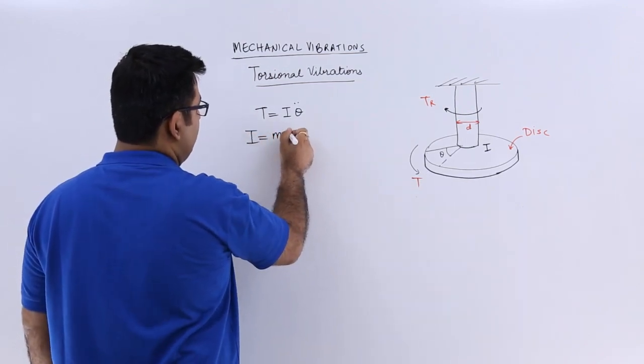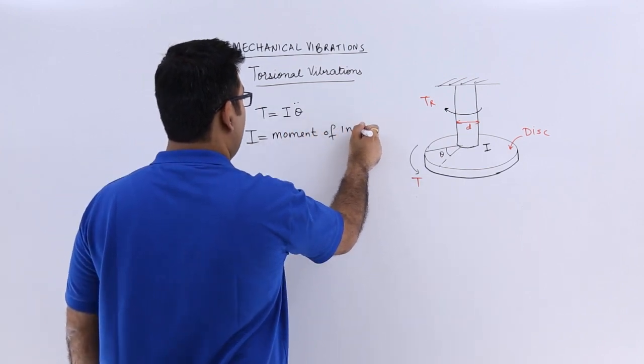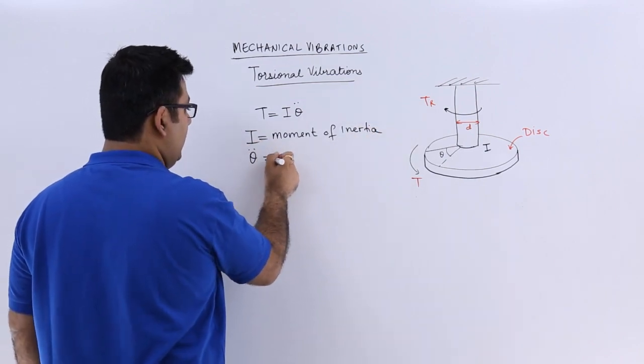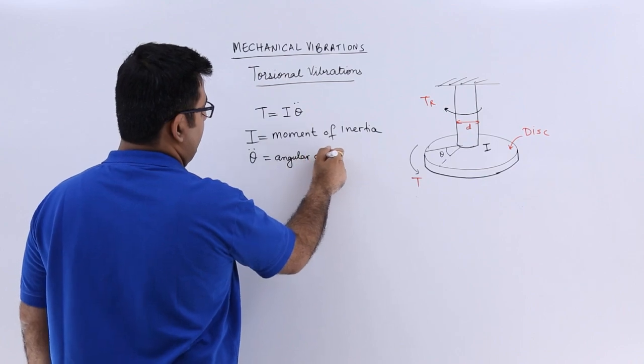This is the moment of inertia, and theta double dot is the angular acceleration.